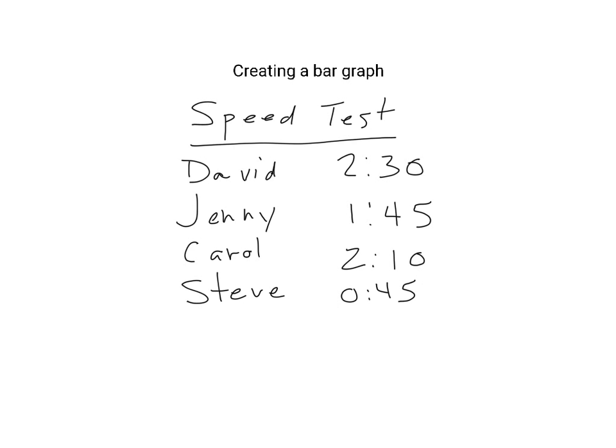This is our table and this is the information we're going to use. Our first kid could be David because he's just at the top of the list — we don't have to put them in any particular order. We can see that all the times here are under two and a half minutes, so I think if we split our time Y-scale up by 30 seconds that should work well.